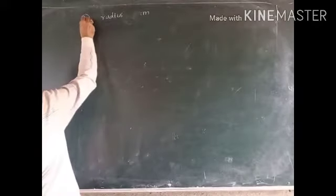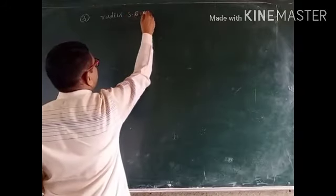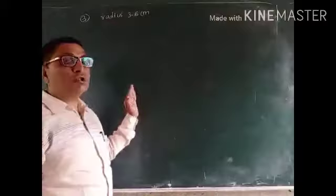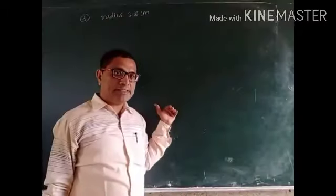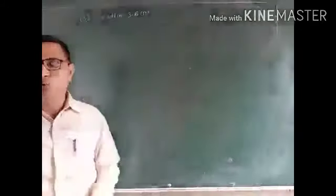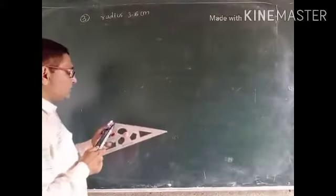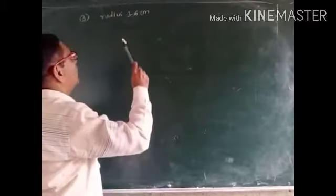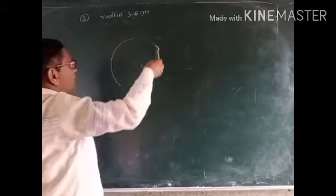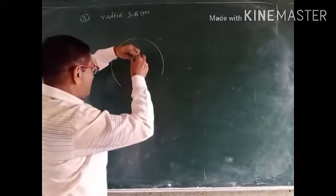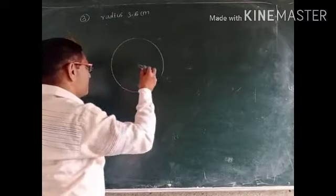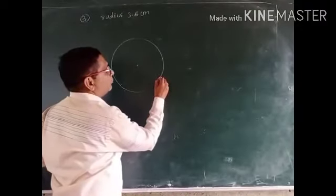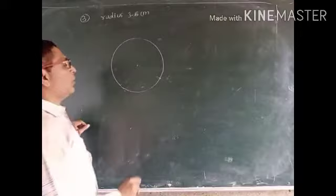In the third example, we draw a circle of 3.6 centimeter radius. In the previous two examples we used the center of the circle, but in this third example we must not use the center. I take 3.6 centimeter distance, fix the center, draw the circle, and then set aside that center.